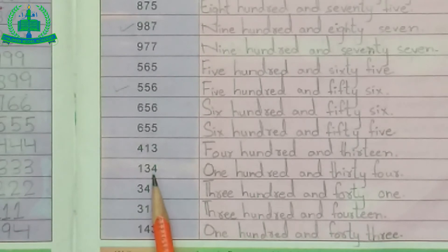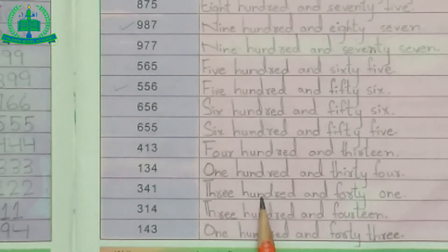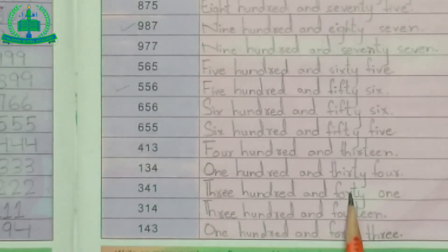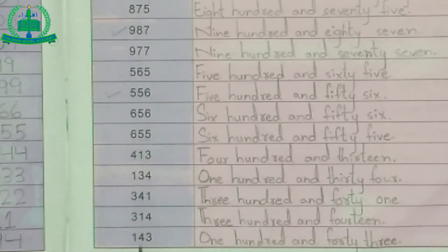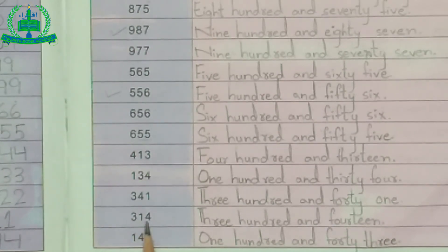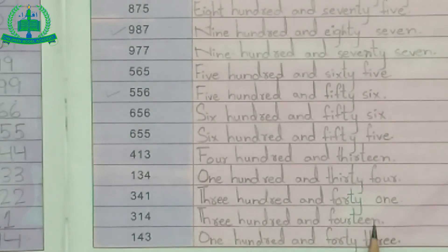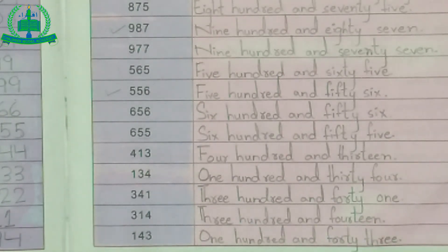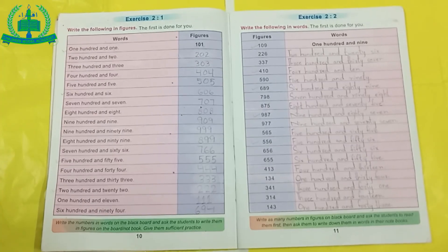134: one hundred and thirty-four. 341: T-H-R-E-E, H-U-N-D-R-E-D, A-N-D, F-O-R-T-Y, O-N-E. 314: three hundred and fourteen. 143: O-N-E, H-U-N-D-R-E-D, A-N-D, F-O-R-T-Y, T-H-R-E-E. 143: one hundred and forty-three. Now you have to complete your work in the book.